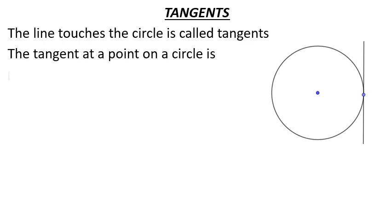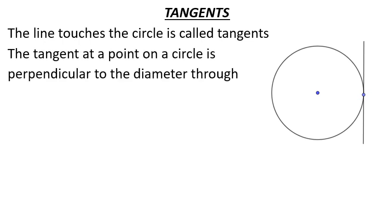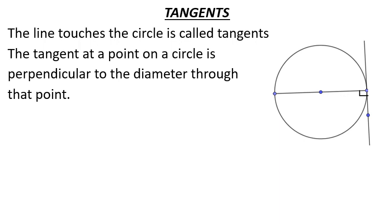The tangent at a point on a circle is perpendicular to the diameter through that point. The tangent on the diameter makes a 90-degree angle, and the tangent on the radius also makes a 90-degree angle — that is, the angle between the tangent and the radius is always 90 degrees.